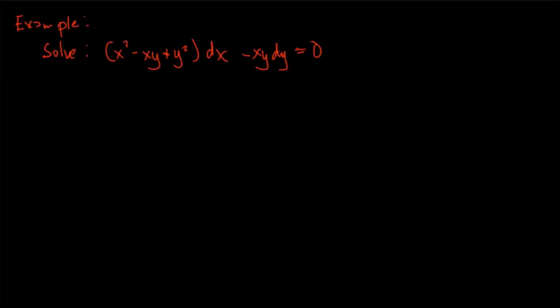We are now back in our discussion on differential equations with homogeneous coefficients. We have an example on screen in which we are going to solve for the general solution. The equation is x squared minus xy plus y squared dx minus xy dy equals zero. By inspection, this given equation could not be separated.